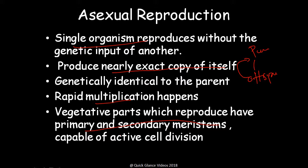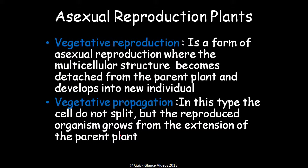In asexual reproduction in plants, we have vegetative reproduction and vegetative propagation. Vegetative reproduction is a form where a multicellular structure becomes detached from the parent plant and develops into a new independent individual. In vegetative propagation, the cells do not split; instead, the reproduced organism grows from the extension of the parent plant, which remains connected to the offspring as it grows.